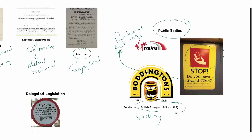So Boddington v British Transport Police establishes that a public body or corporation can create bylaws to which people have to abide by. The court fined the man for smoking on a train. He challenged that, and the courts made it very clear that the train corporation can create a bylaw which is valid law.